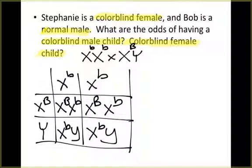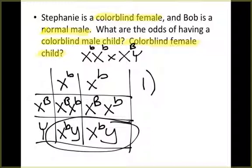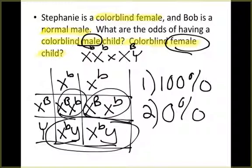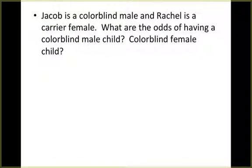After completing the Punnett square: what are the odds of having a colorblind male child? Notice there are only two male offspring — the two at the bottom. Both of them are colorblind, so the odds are 100 percent. Make sure when a question asks for gender-specific answers you respond accordingly. For colorblind female: zero percent — however, both females will be carriers.